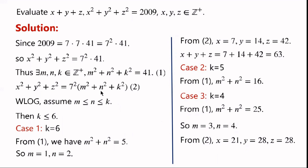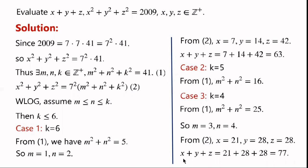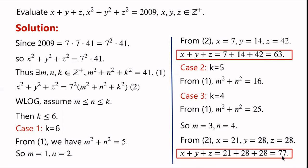y equals 7n; n equals 4, so y equals 28. z equals 7k; k equals 4, so z equals 28. So x plus y plus z equals 21 plus 28 plus 28, which is 77.